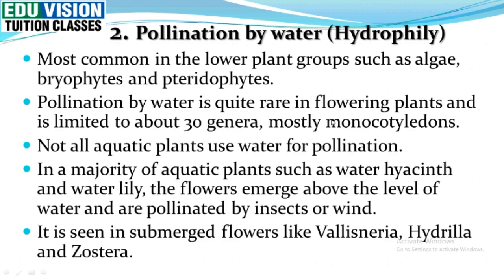Next is pollination by water. This process is called hydrophily. Most of the lower plants such as algae, bryophytes, and pteridophytes commonly show pollination through water. In flowering plants, it is rare. There are some exceptions like water hyacinth and water lily, where the flowers are up to the water level and pollinated by insects and wind.